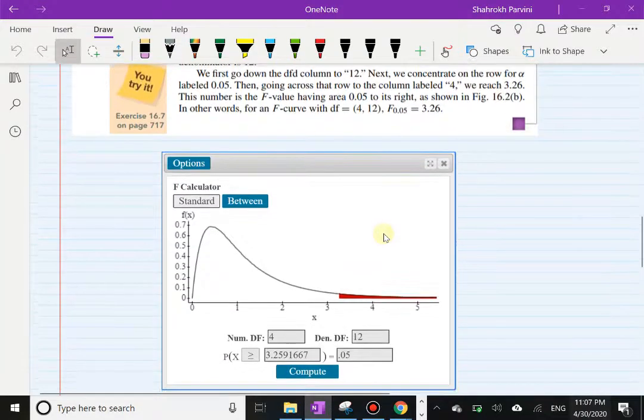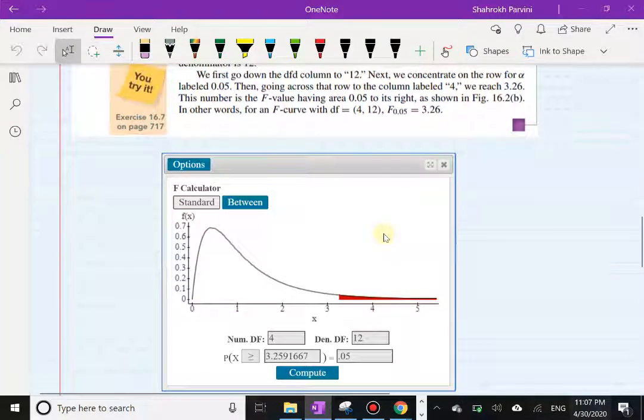You get exactly the same answer that the author has. Remember he had 3.26, which is the rounded version of this one. So in StatCrunch this is what the F curve looks like. The area to the right is 0.05 right here.